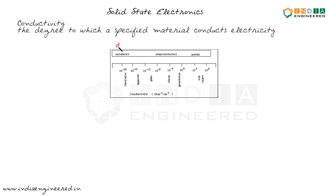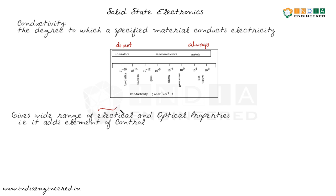Insulators do not conduct and metals always conduct. But what a semiconductor does is it gives us a wide range of electrical and optical properties — we can change the conductivity of a semiconductor. So it adds an element of control in deciding the electrical and optical properties. We can use different semiconductor materials according to our requirement and have more control by some processes.